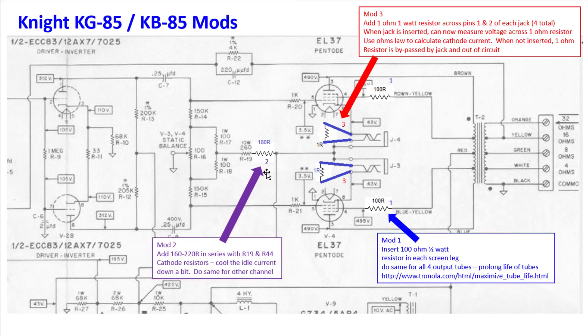For mod number two, if you remember earlier we were running these at about 55 milliamps or so per tube on the idle bias. There's a lot of articles out there if you read them on the KB-85, KG-85, that's a little hot and they would recommend cooling this down somewhere in the 40 some milliamp, 43, 45, 48, 50 milliamps range. You can do that by simply in series with the 260 ohm 10 watt, those stick resistors that were going up through the chassis, you would just insert in series with that another large resistor here. It says add between 160 and 220 ohm.